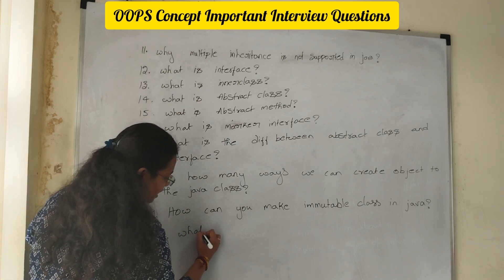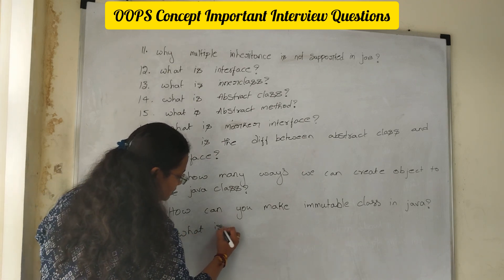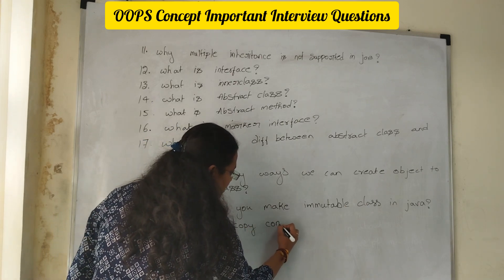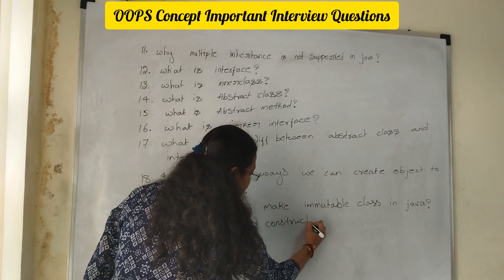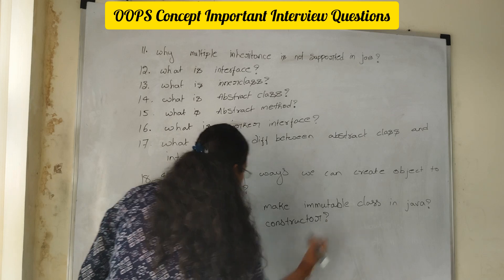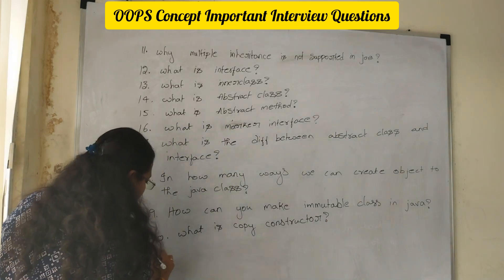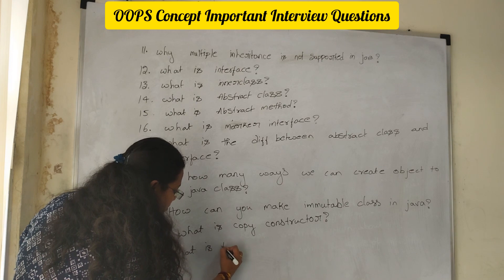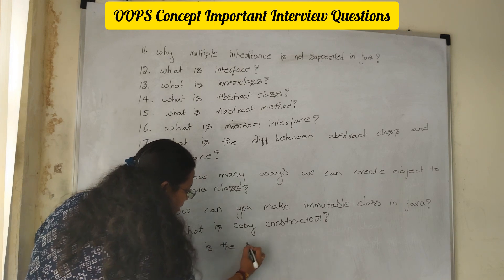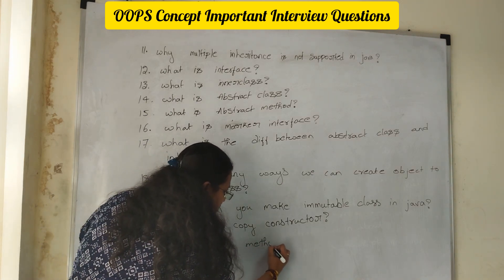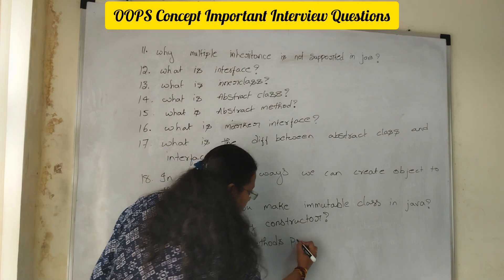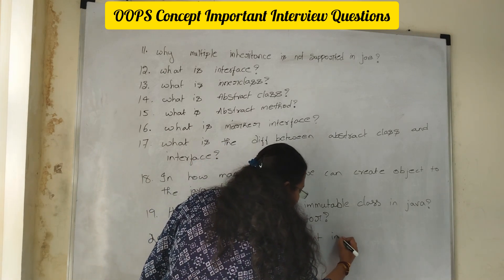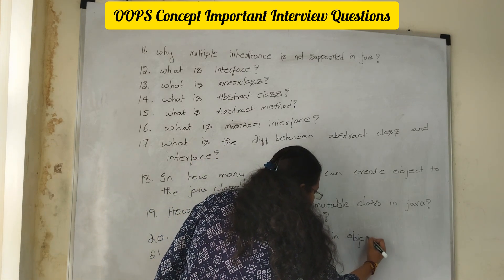Twentieth question: what is a copy constructor? Twenty-first: what are the methods present in the object class?